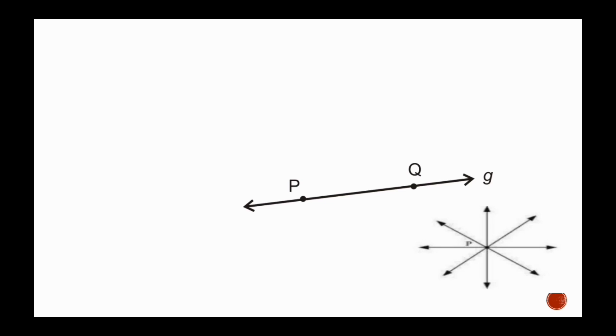Through two distinct points, one and only one line can be drawn. In the following figure, point P and point Q is shown. Through these two points, only one line is drawn.